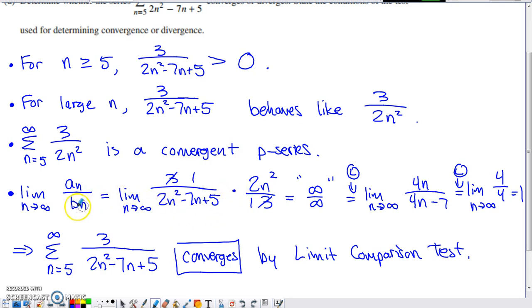And so if we change dividing by this series to multiplication by the reciprocal, we can cancel our 3s. We do end up with infinity over infinity initially, but applying L'Hopital's rule a couple times gives you 4 over 4, which is obviously just 1. This limit is positive and finite. Therefore, whatever the series we're comparing with does, converges. Our series also does. So our series is going to converge by the limit comparison test.